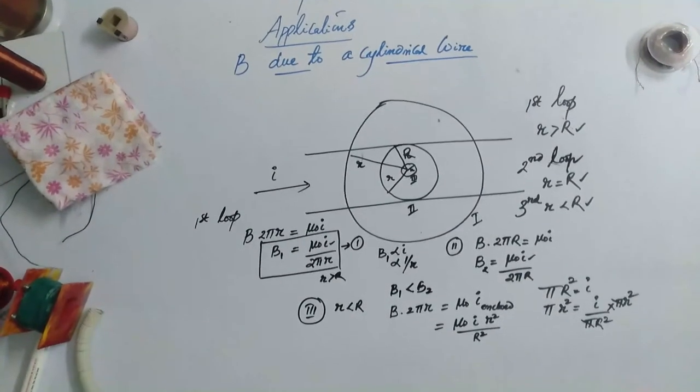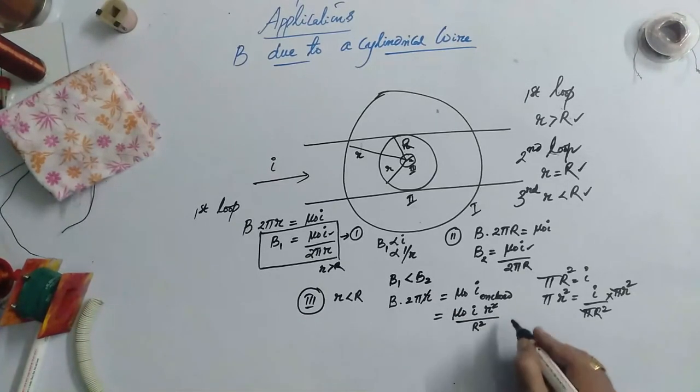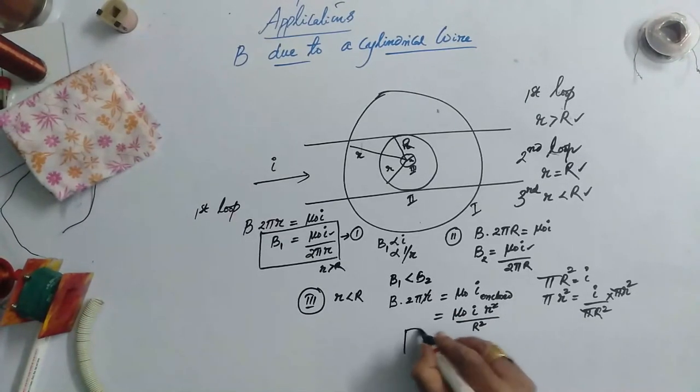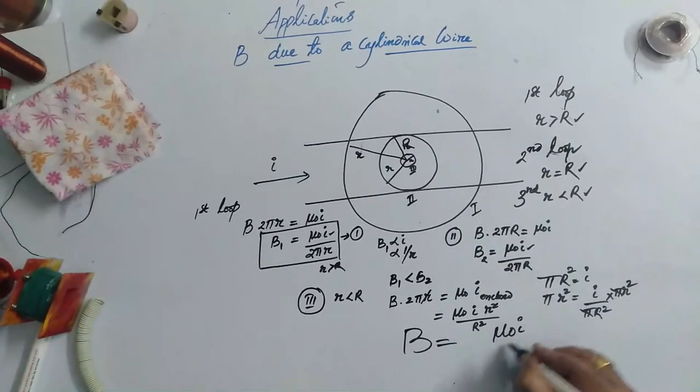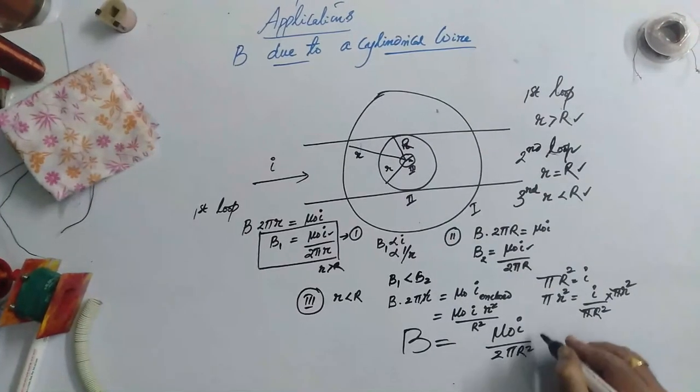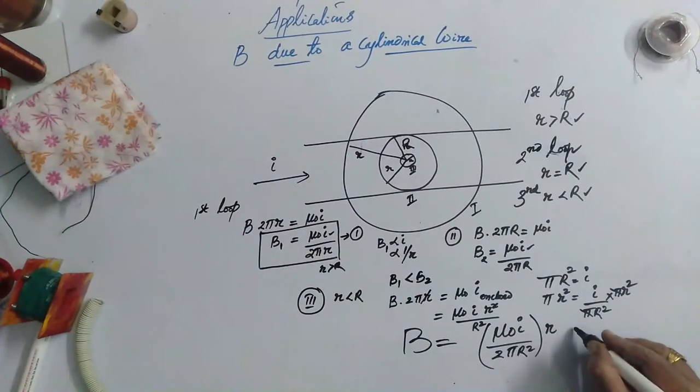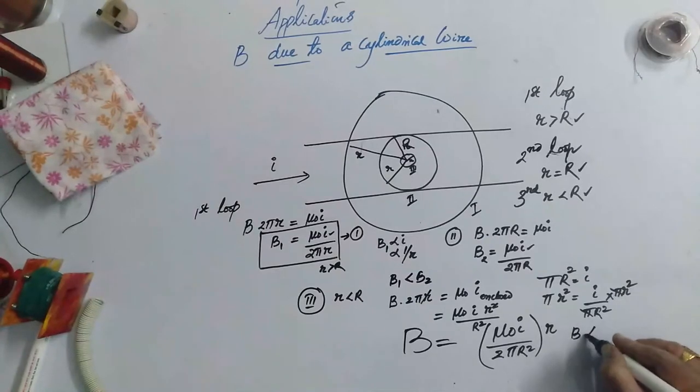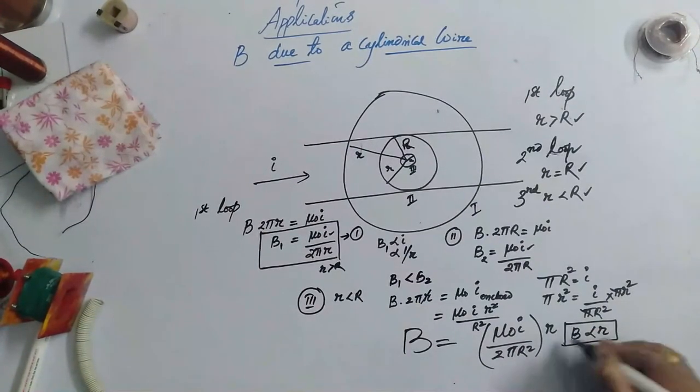Now what should be the value of B here? I can cancel out one r and then I can finally write B is equal to mu 0 times I by 2 pi R square times small r. So here B is directly proportional to r.